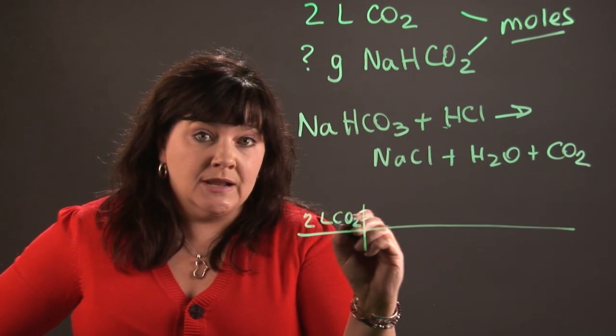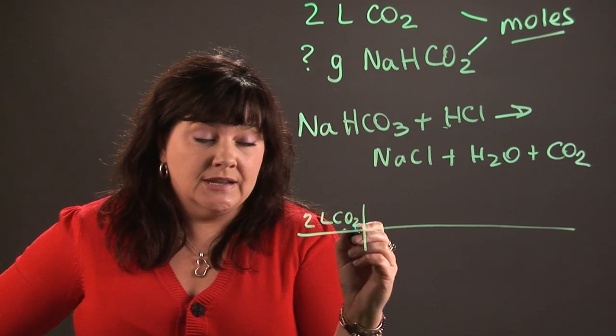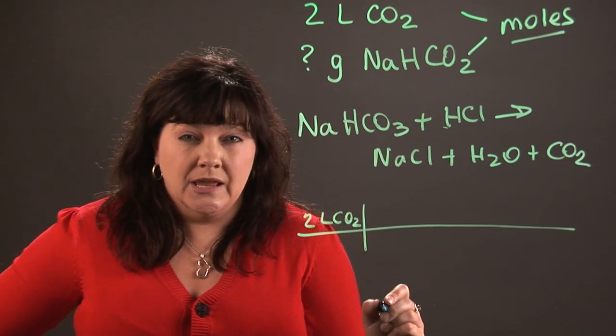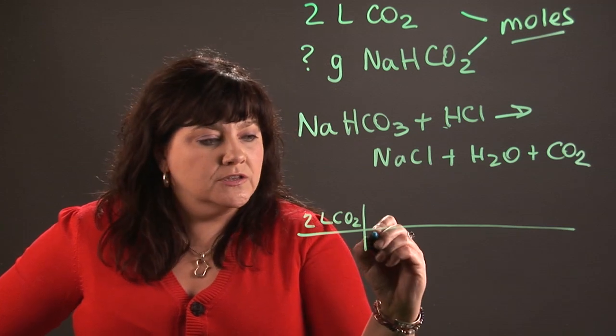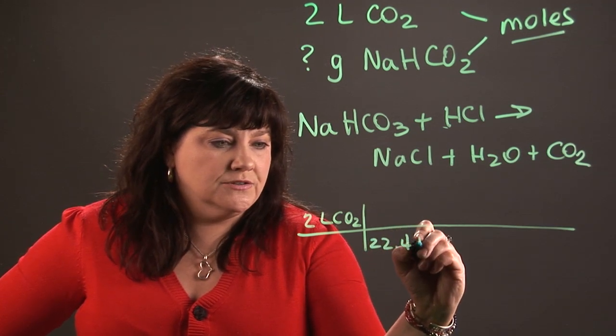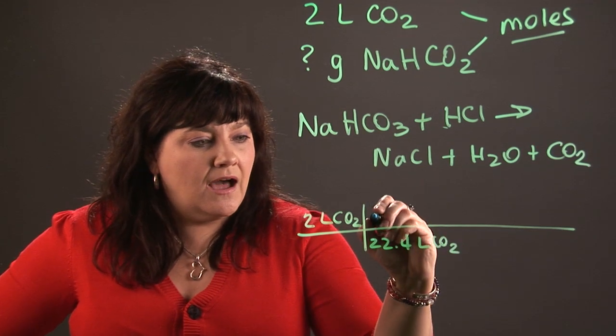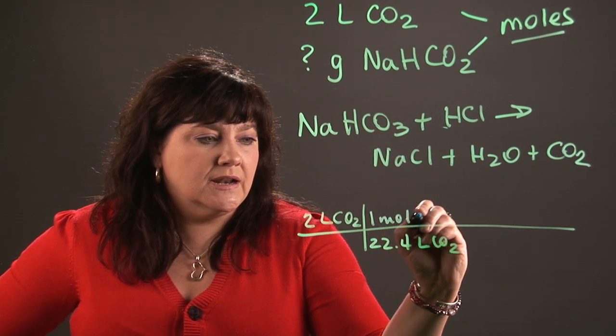So I have liters written up top here. Anytime we're doing dimensional analysis, we want the same units to be across from each other so we can cancel them out when we divide. So I'm going to put 22.4 liters of carbon dioxide down here, and then I'll have one mole of carbon dioxide up top.